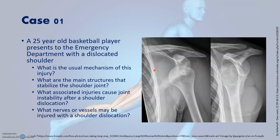Here's the first case: a 25-year-old basketball player with a dislocated shoulder. For each of these joints, we're going to think about the usual mechanism of dislocation, the main structures that stabilize the joint and thus prevent dislocation, injuries associated with dislocations of joints that may cause instability, and the nerves and vessels that are most likely associated with these dislocations or nerve and vessel injuries.